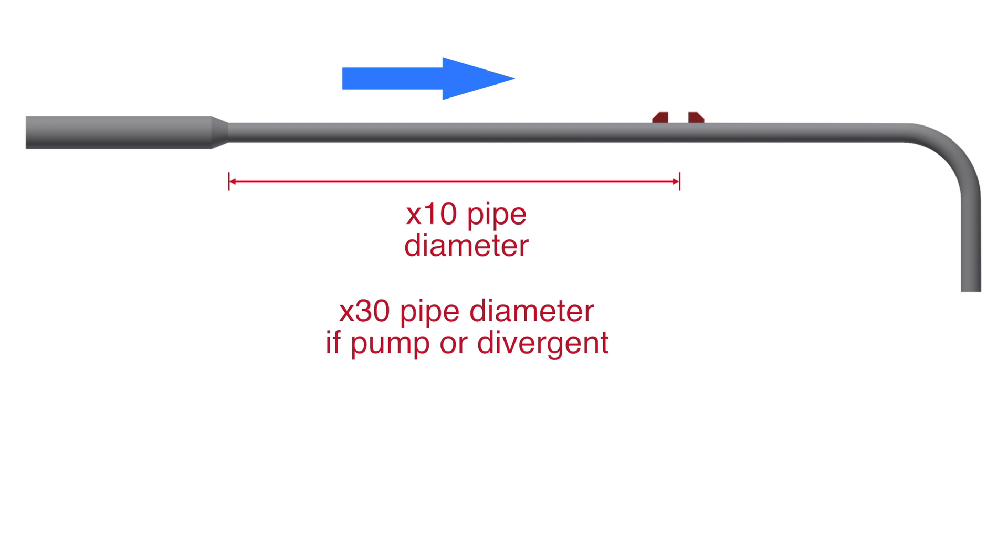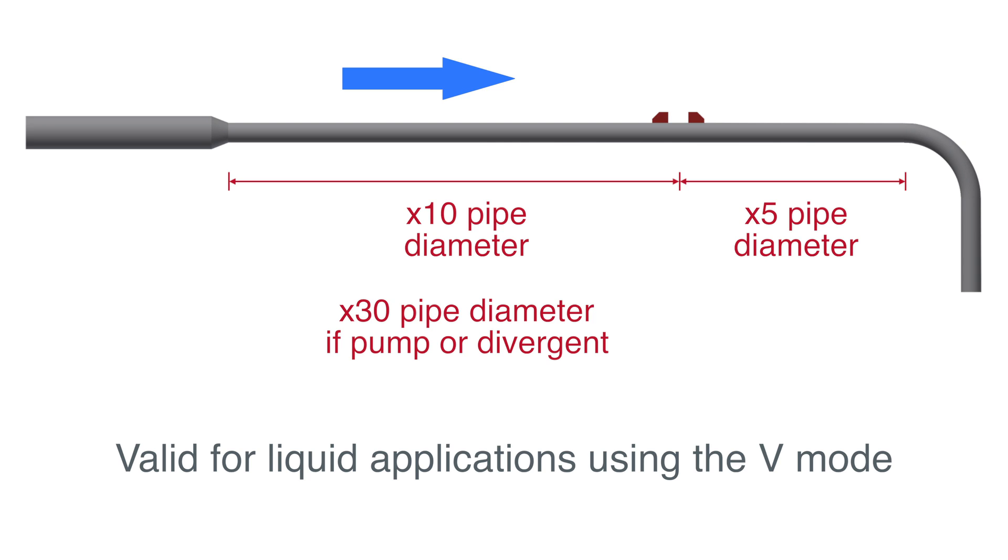Increase this distance to a minimum of 30 times the pipe diameter if the perturbation is a pump or a divergent. Make sure a minimum of 5 times the pipe diameter is available after the probes. Those values we just gave here apply for liquid applications using the V mode.